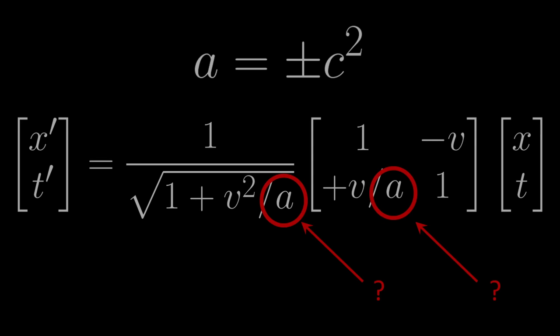Either A is equal to 0, thus implying C equals 0. A is positive, implying that A is equal to positive C squared. Or A is negative, implying that A is equal to negative C squared. So let's consider each of these cases one by one.